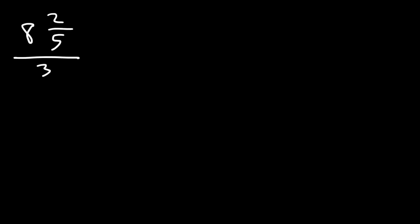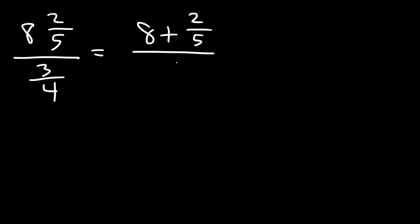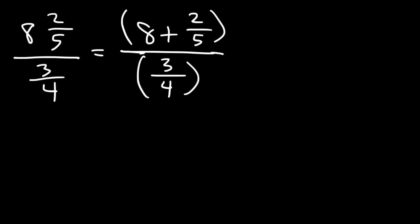The second method is to convert the mixed number into a whole number and a fraction. So 8 and 2 fifths we can write as 8 plus 2 over 5. What we have here is a complex fraction. To simplify it, I like to multiply by something that will eliminate the two smaller fractions within the larger fraction — getting rid of the 2 over 5 and the 3 over 4 — so I need to get rid of 5 and 4. I'm going to multiply the top and bottom by 20.